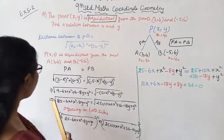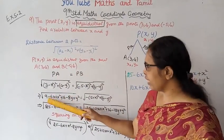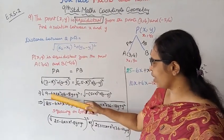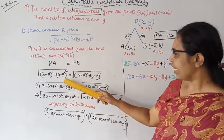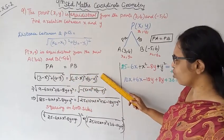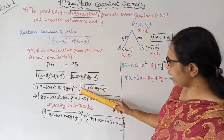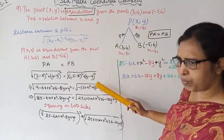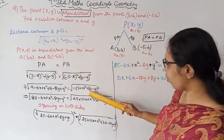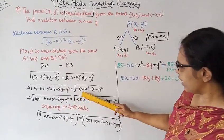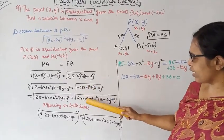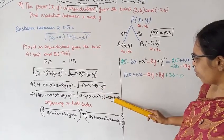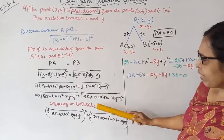Using (a - b)² formula, we expand: (3 - x)² = 9 - 6x + x², (4 - y)² = 16 - 8y + y². For PB, (-5 - x) becomes (5 + x), so (5 + x)² = 25 + 10x + x², and (6 - y)² = 36 - 12y + y².